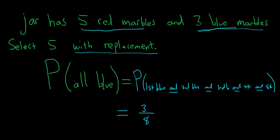So the probability that the first marble is blue is the number of ways to pick a blue marble, which is three, divided by the number of ways to pick a marble, which is eight. And 'and' means times.